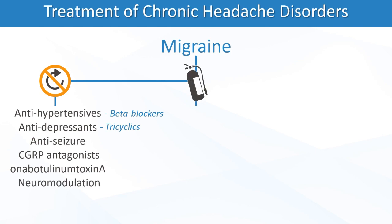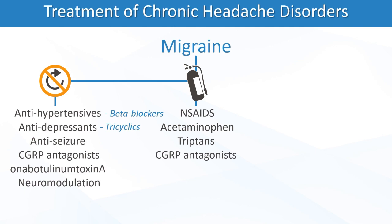Additional preventive options include onabotulinumtoxinA and neuromodulatory devices. Rescue treatments are the same as those used for acute migraine, including NSAIDs, acetaminophen, triptans, CGRP antagonists, neuromodulation, and older treatments such as ergotamines. Antiemetics are often also necessary.